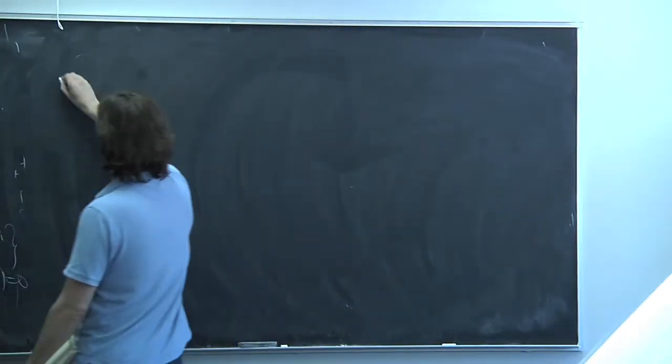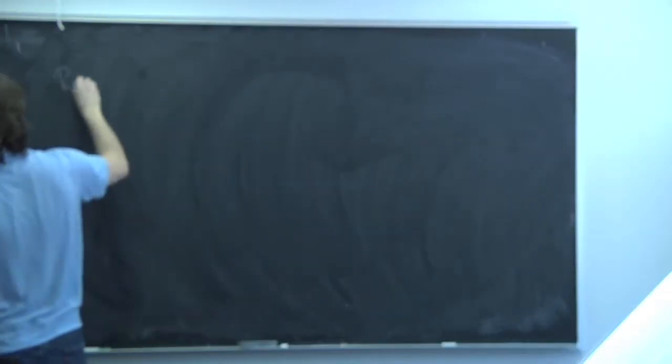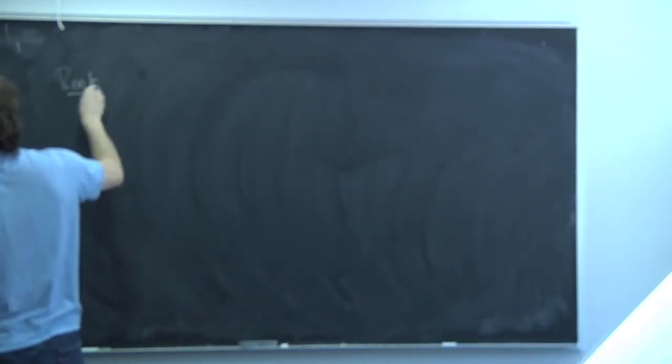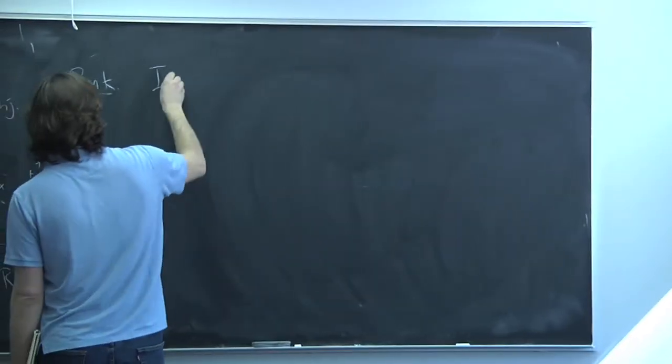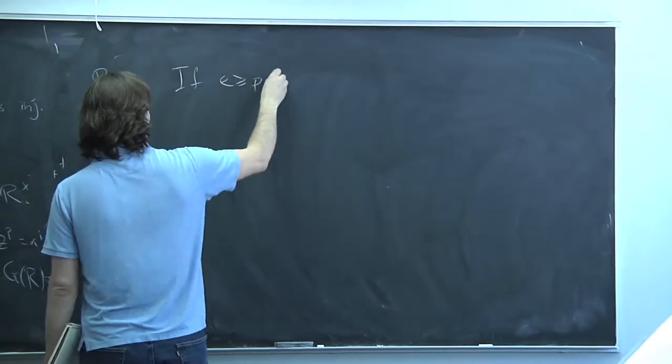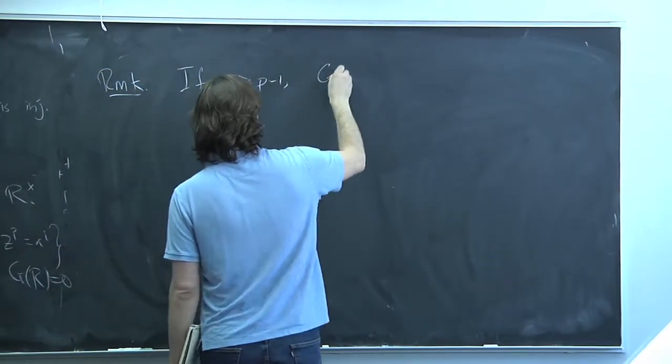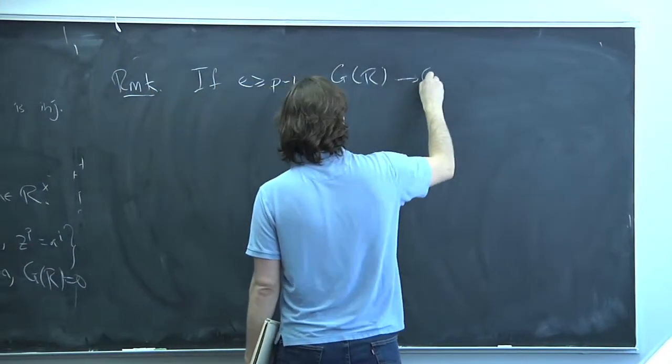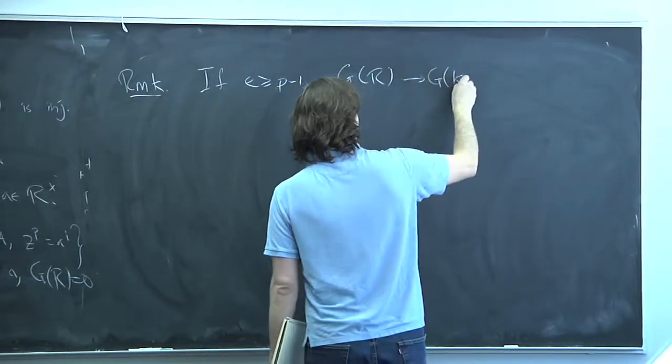Second remark: if e ≥ p - 1, then the map is not necessarily injective. You have to be more creative to find an example.